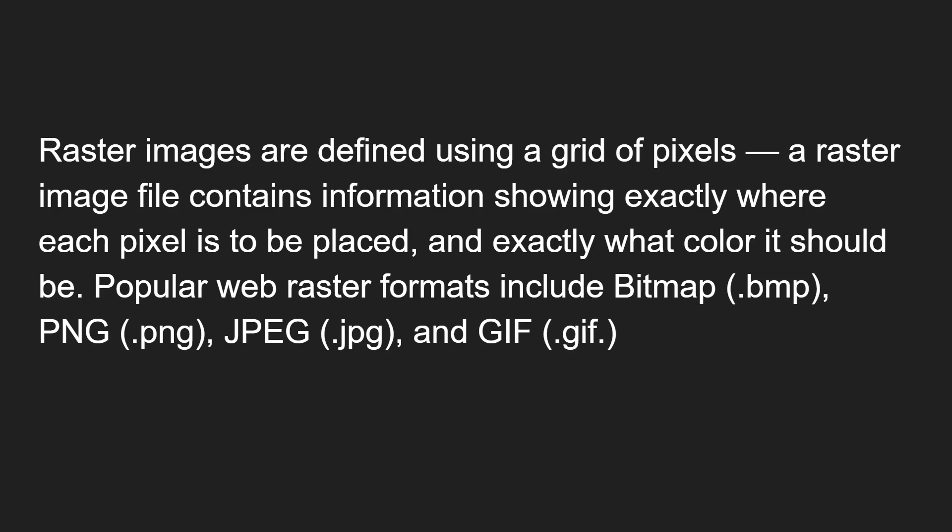Raster images are defined using a grid of pixels. PNG, JPG, and GIF files are all called raster images. A raster image file contains information showing exactly where each pixel is to be placed and exactly what color it should be. If you open a PNG or JPG file in Notepad you will see lots of code - every pixel's color information is written as code. Popular web raster formats include BMP, PNG, JPG, and GIF.